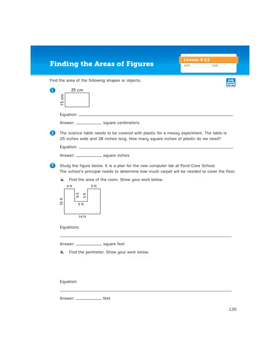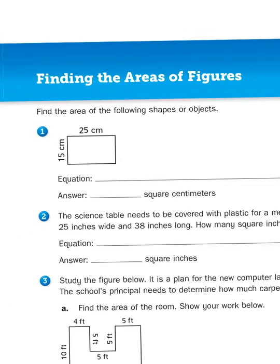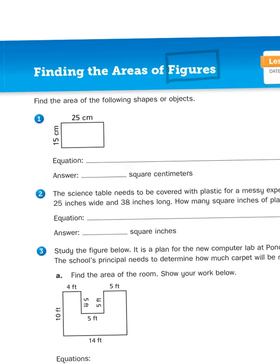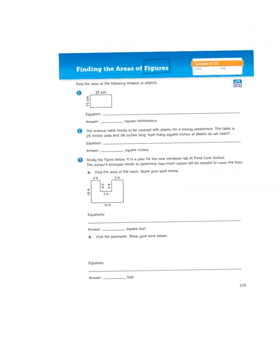Hello again, boys and girls. It's Mr. Wassman, and today we are revisiting the concept of area, and we're going to expand our understanding of that concept in two ways. One, we're going to explore how to find the area of a rectangle involving larger digit numbers in their measurements, and two, we're going to look at finding the areas of figures, which is the title of our math journal lesson today, because not all figures are rectangles, right? We're in our math journal on page 135, unit 4, lesson 11.